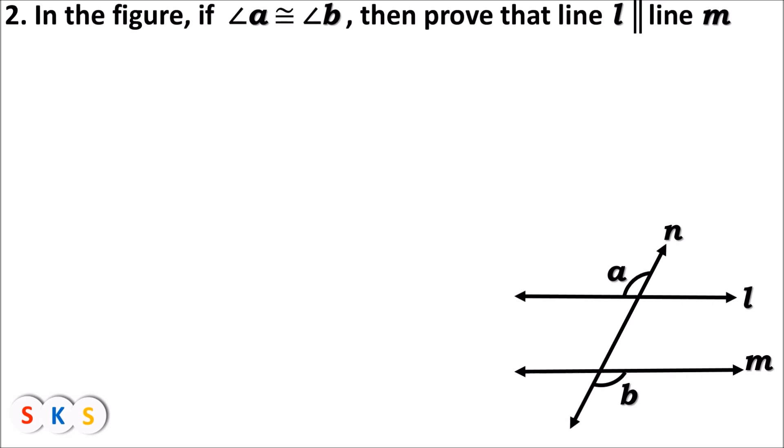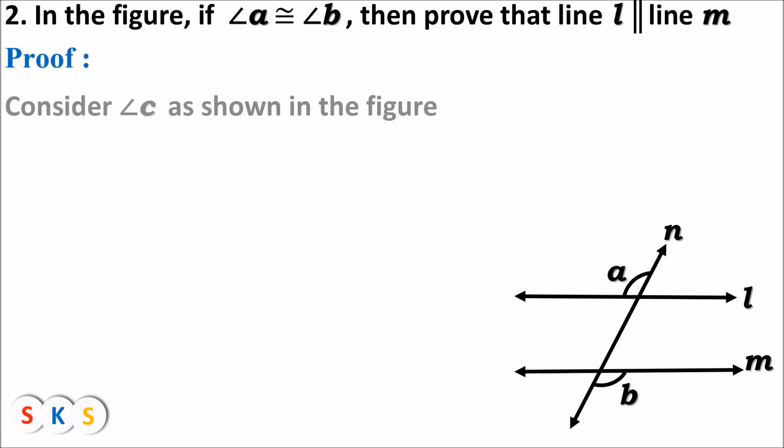Here we have question number two. In the figure, if angle a is congruent to angle b, then prove that line l is parallel to line m. Let's see the proof. Consider angle c as shown in the figure. I am going to name one of the angles as angle c, taken opposite to angle a.